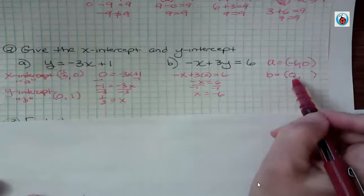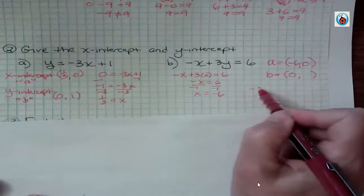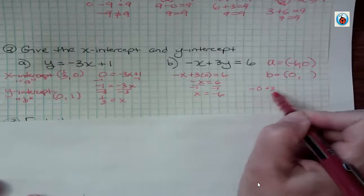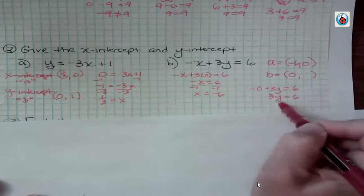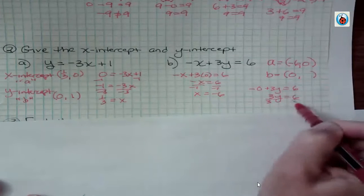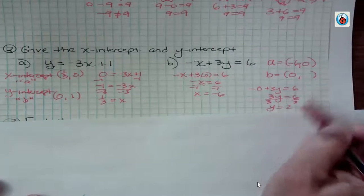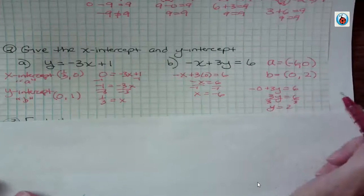If x is 0, then I have negative 0 plus 3y equals 6. 3y equals 6. Or if I divide both sides by the coefficient, I get y equals 2. So there's my two intercepts.